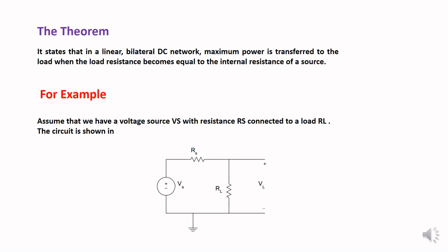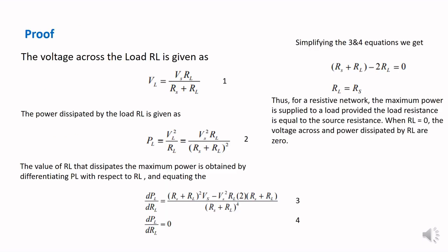The circuit consists of a DC voltage source VS with internal resistance RS, connected to a load resistance RL. We will verify the Maximum Power Transfer Theorem on this circuit. First, we find how much voltage is across the load resistance RL, denoted by VL.